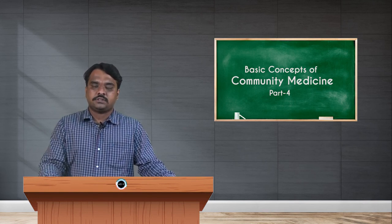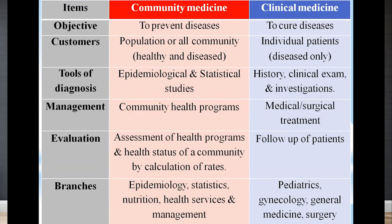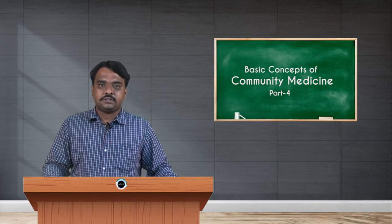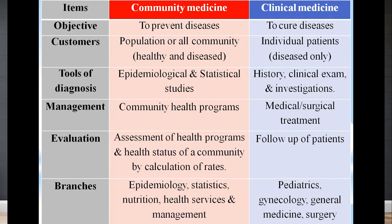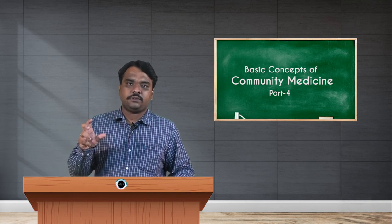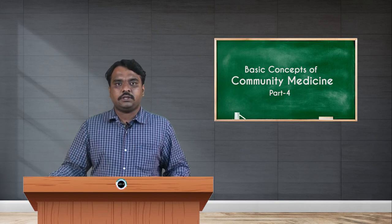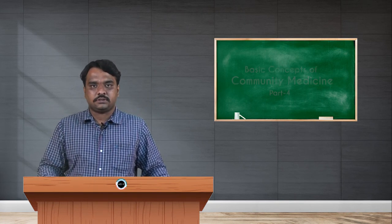Coming to the branches of community medicine, it mainly deals with epidemiological studies, statistics, nutrition, health services, and management. Whereas the branches of clinical medicine include pediatrics, gynecology, cardiology, general surgery, psychiatry, and pulmonology, among others. Each branch specializes in a specific body system — the pulmonologist deals with the respiratory system, the gynecologist with obstetric and genital issues, the gastroenterologist with the gastrointestinal system, and the cardiologist with the cardiovascular system. Each specialization deals with that specific disease.